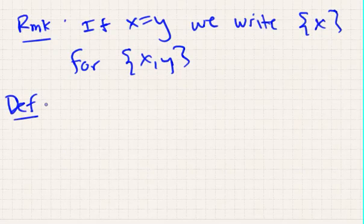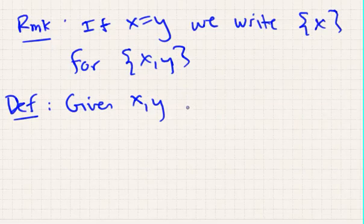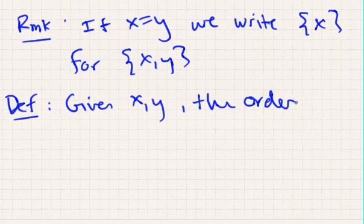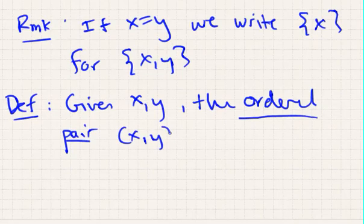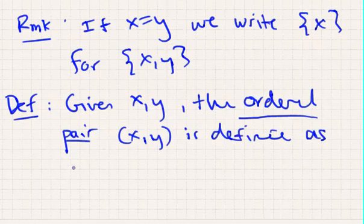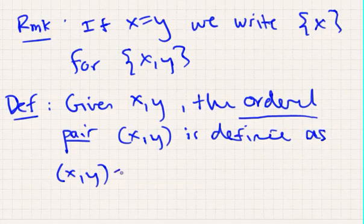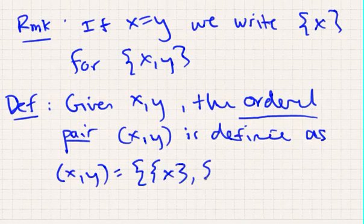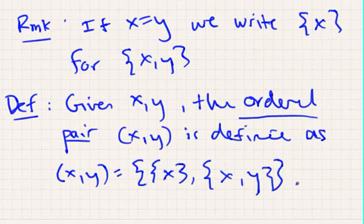So given sets x and y, the ordered pair is defined as the set x comma y is equal to this. Now, why is this different than defining it in the first video? The reason why is that, well, first, for this definition to even make sense, the thing that we're defining the ordered pair to be has to be a set. So, in other words, this here has to be a set.